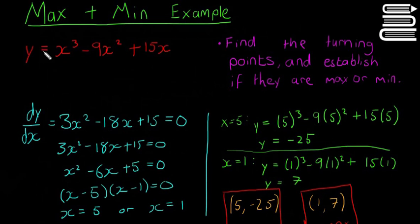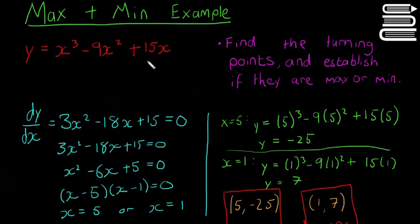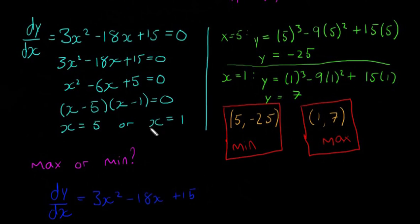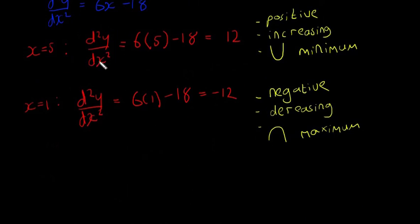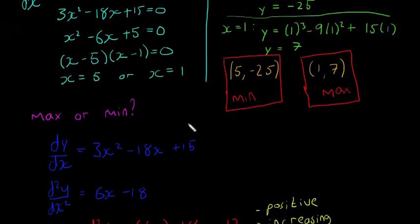This is the kind of question you might get in the exam — they give you a cubic and say find the turning points and establish if they're maximum or minimum. To find turning points, let dy/dx equal zero to get a quadratic and solve it; a cubic gives two turning points. Then find d²y/dx², substitute both x values in, check if positive or negative, and that tells you minimum or maximum. Hope that video helped — see you next time.